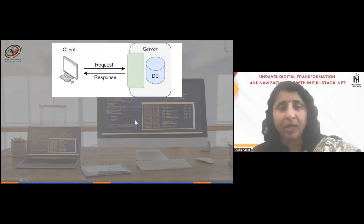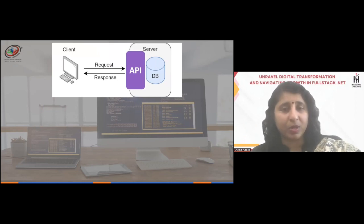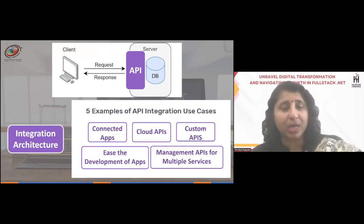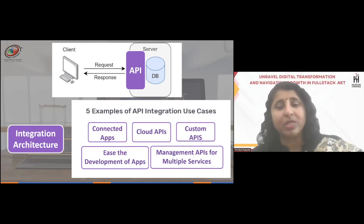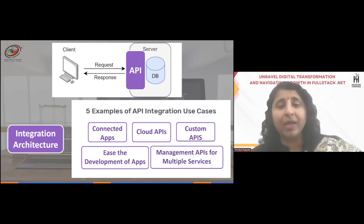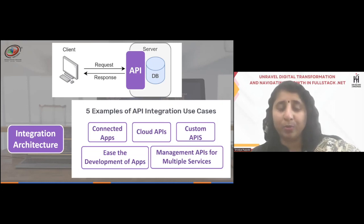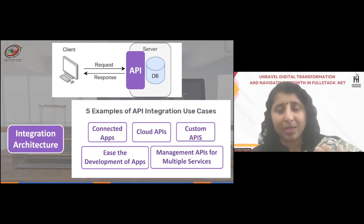Looking at client-server engagements and APIs built to facilitate client-server responses — integrated architecture has evolved not only to connected apps and cloud APIs. Azure has come with its own APIs and structures for cloud-based solutions. Custom APIs are also important, and ease of development has evolved so much that many open source libraries are now available to us.